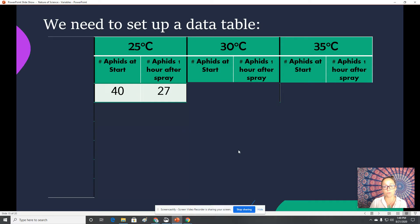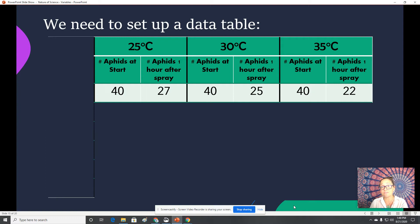And so if we start with 40 in each of the temperatures, we want to write down how much we have surviving or remaining. You could also likely write down how many died if you're able to find them on the ground. So here, if this was all we did, we would see that the 35 degrees Celsius killed the most aphids. There's only 22 remaining, which means that 18 died.